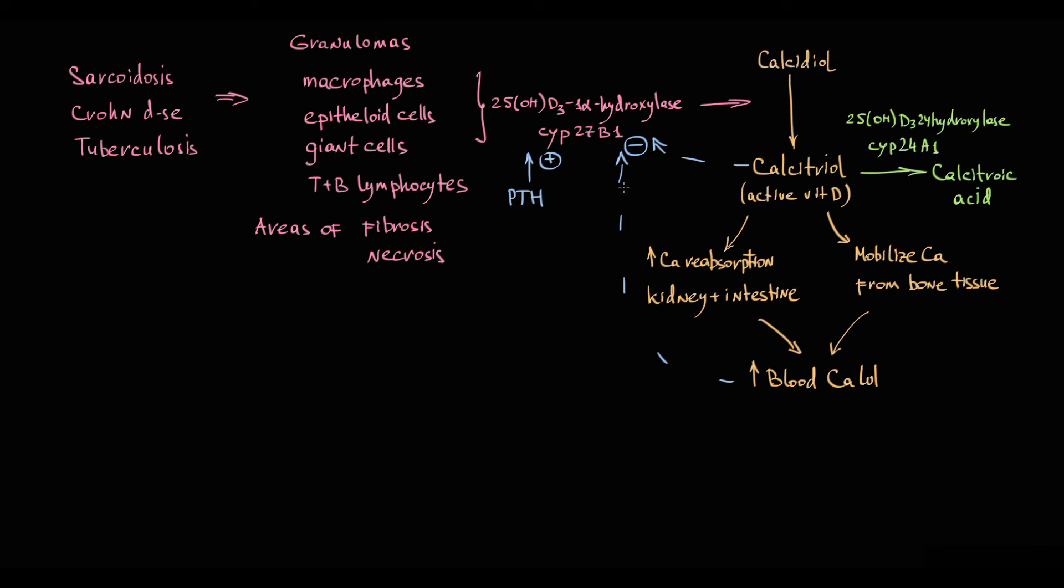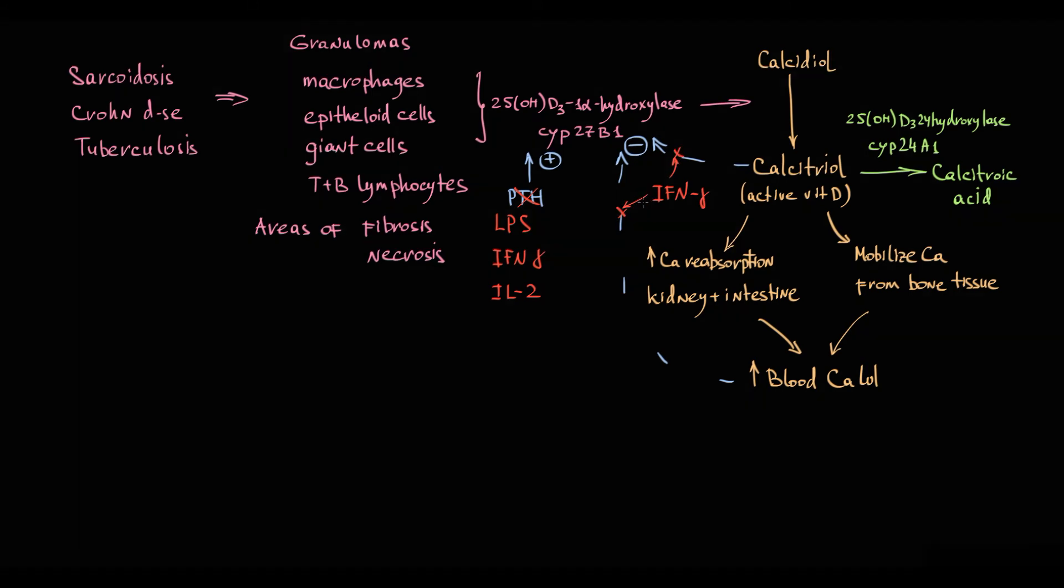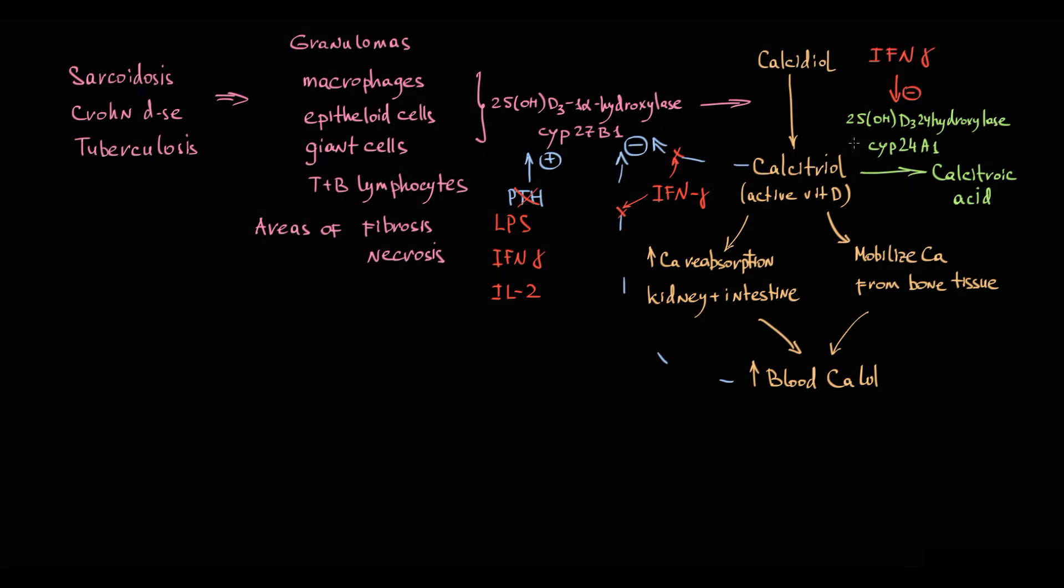In macrophages, 1-alpha-hydroxylase enzyme is sensitive only to immunological stimuli. The activity of this enzyme is stimulated by pro-inflammatory substances such as lipopolysaccharides, interferon-gamma, and interleukin-2. Exactly interferon-gamma disrupts calcitriol negative feedback regulation, and in addition to this, interferon-gamma inhibits 25-hydroxyvitamin D3-24-hydroxylase enzyme, and by this it prevents calcitriol inactivation.